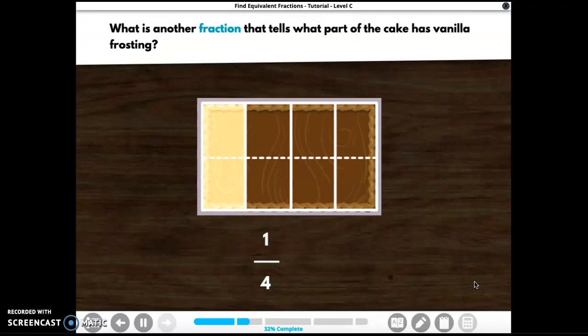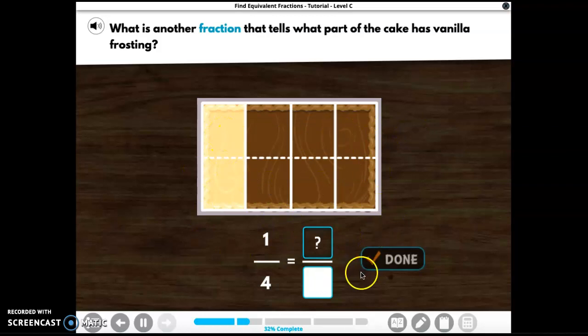What is another fraction that tells what part of the cake has vanilla frosting? How many parts are there total? One, two, three, four, five, six, seven, eight. And how many parts have vanilla? Two. One, two. One fourth and two eighths name the same amount of cake. They are equivalent fractions.